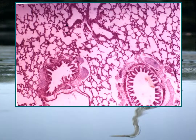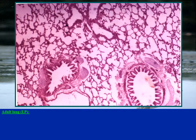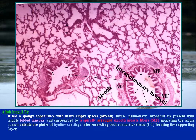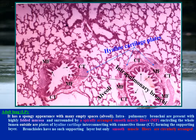Adult lung at low power shows intrapulmonary bronchioles with highly folded mucosa surrounded by spirally arranged smooth muscle fibers encircling the whole lumen. Outside are plates of hyaline cartilage connected with connective tissue forming the supporting layer. Bronchioles, on the other hand, have no such supporting layer — only smooth muscle fibers circularly arranged surrounding the mucosa.